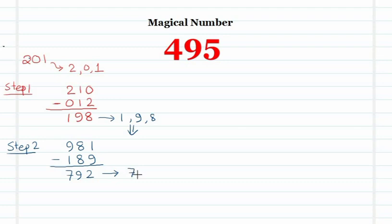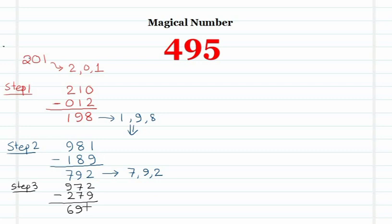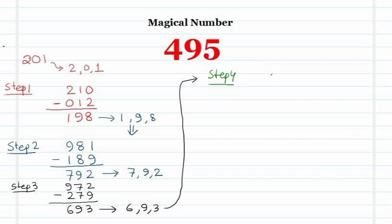The digits in 792 are 7, 9, and 2. Form the largest number: 972. The smallest number: 279. Find their difference: 693. The digits in 693 are 6, 9, and 3. Now form the largest number from these three digits — Step 4 gives us 963.